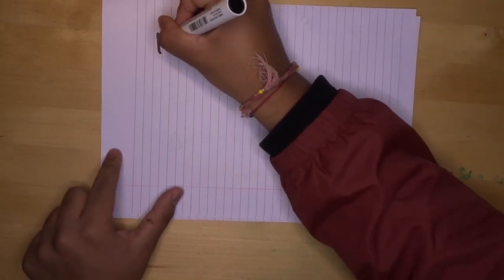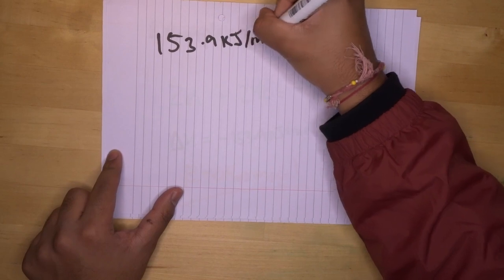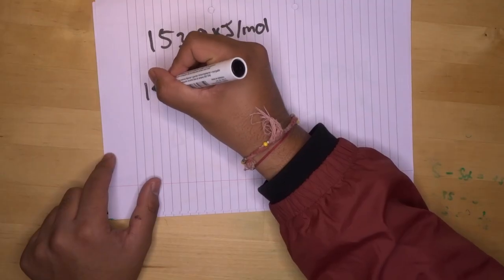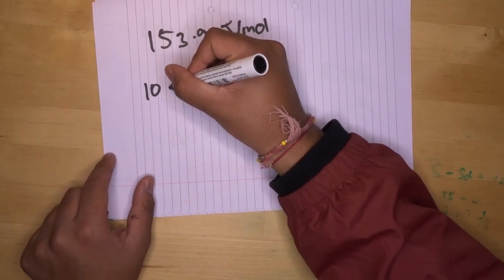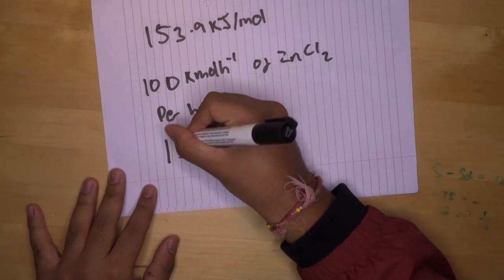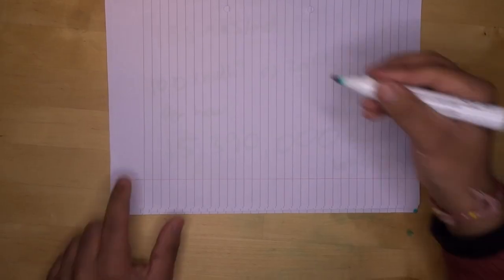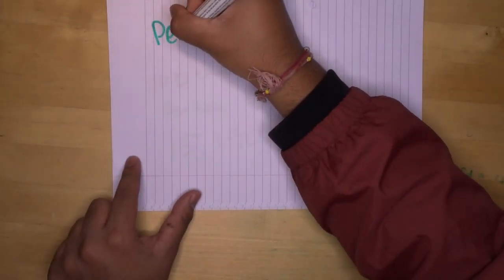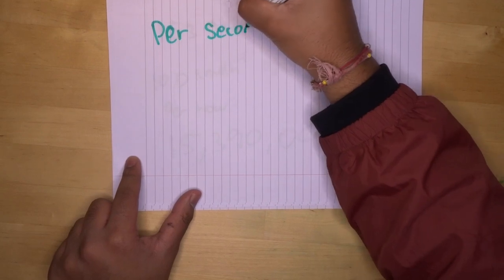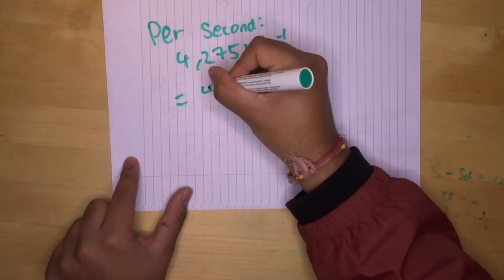We have 153 kilojoules per mole of heat being released. A typical plant would be 100 kilomole per hour production rate of ZnCl2. However, so that means per hour 15,390,000 kilojoules of heat is being released. Now this means that 4275 kilojoules of heat is being released every second, which can also be said as 4.3 megawatts.